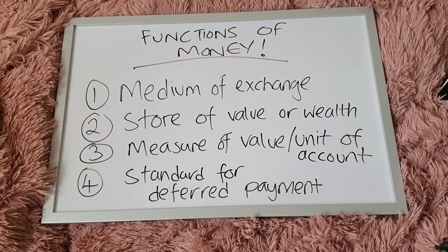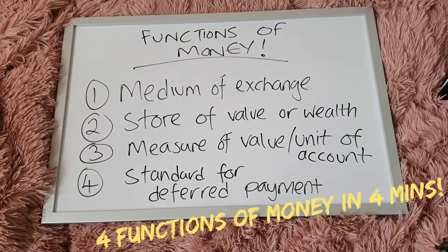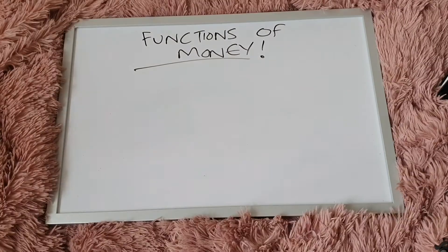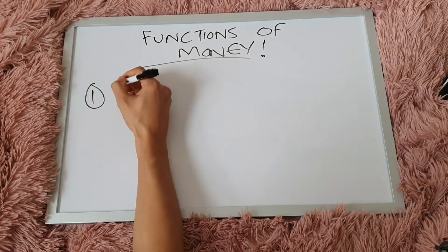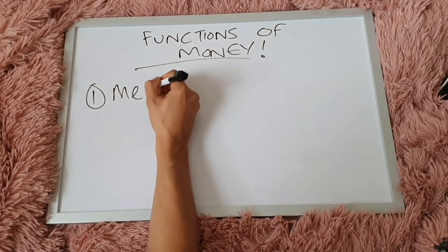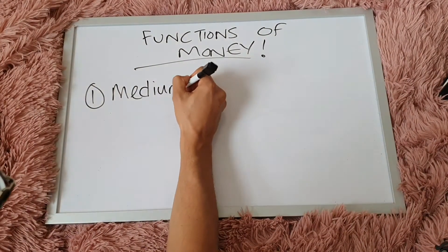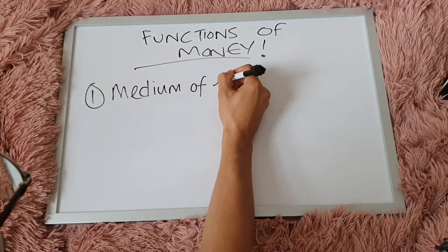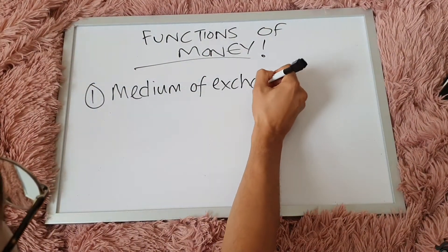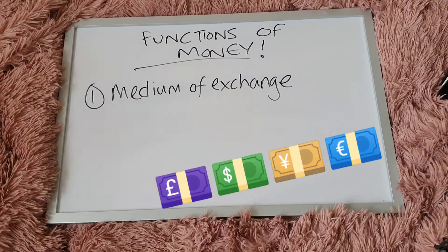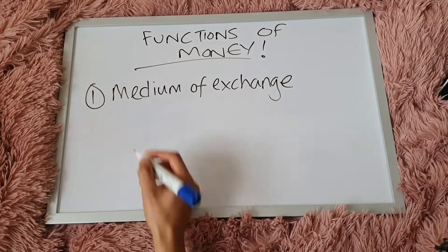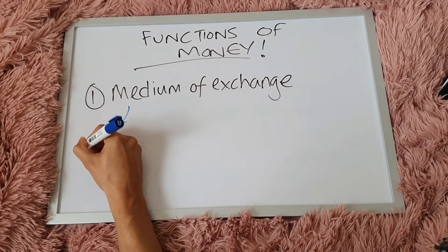Hey guys, so four functions of money in four minutes. The first function of money is a medium of exchange. In today's economy, we use notes and coins as money rather than barter as a medium of exchange.